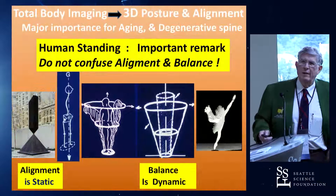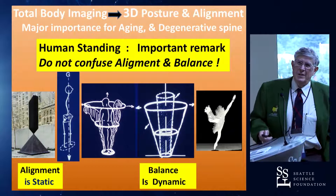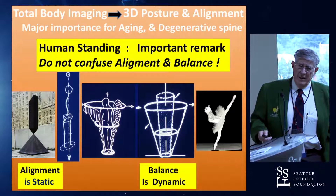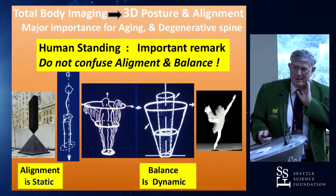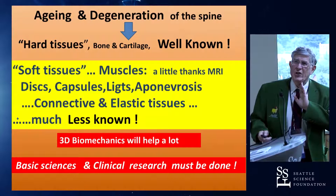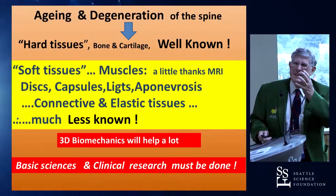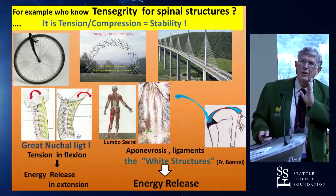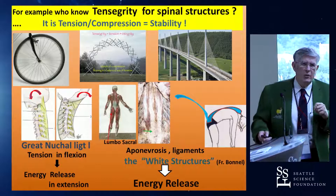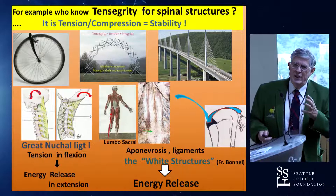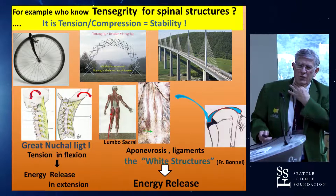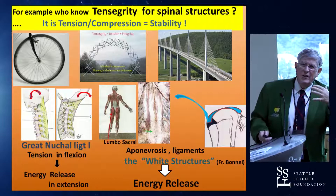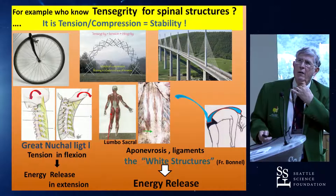The importance of this total body imaging is that an important remark — I said last year exactly in this meeting — do not confuse alignment, which is static, and balance, which is dynamic. Aging and degeneration of bone tissue are well known, but soft tissue is much less known. We have basic science and a lot of research to do. Nobody in this room knows what tensegrity is for spinal structure. Tensegrity is tension-compression, meaning stability — it is all the white anatomical structures on the human that work like energy release. All these structures must be understood and studied, and not removed carelessly.